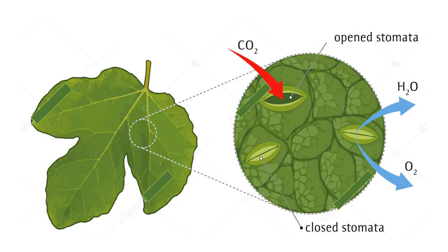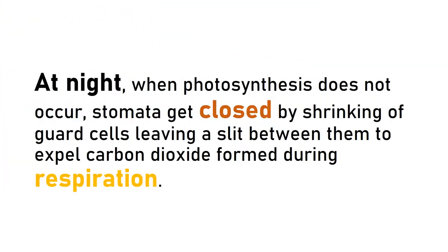Through this diagram, you can have a look at open stomata and closed stomata. Carbon dioxide from the atmosphere is getting in, whereas oxygen and water molecules are releasing out. At night, when photosynthesis does not occur, stomata get closed by shrinking of guard cells, leaving a slit between them to expel carbon dioxide formed during respiration.